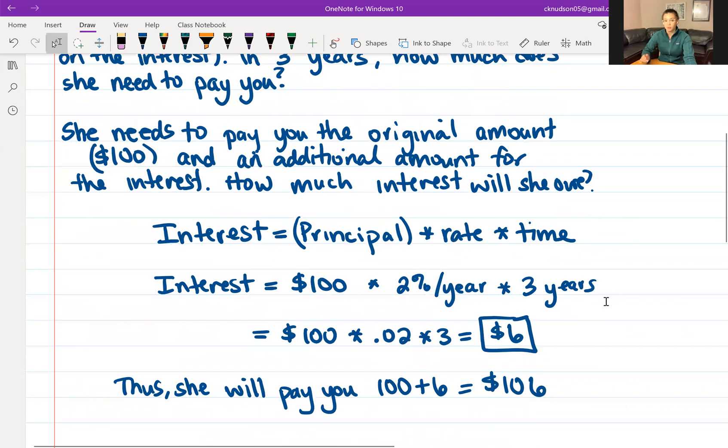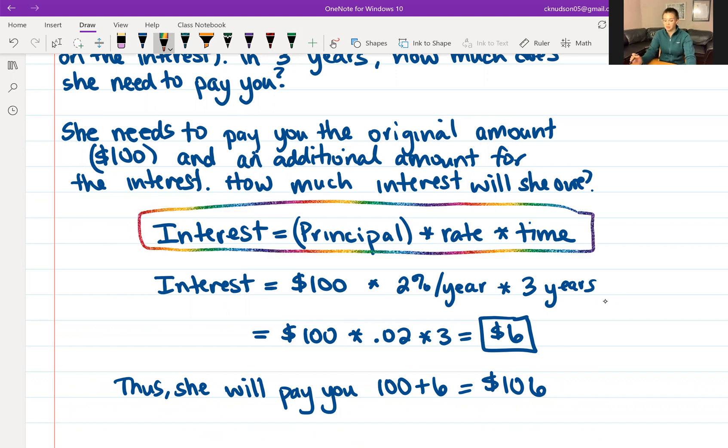Some relevant equations: the interest that she will pay is the amount that she borrows, which is called the principal, times the rate, times the time. So write this down in your notes. Interest equals principal times rate times time. In this case, the principal, the amount that she's borrowing, is $100. She is getting a rate of 2% per year, and she's borrowing it for three years.